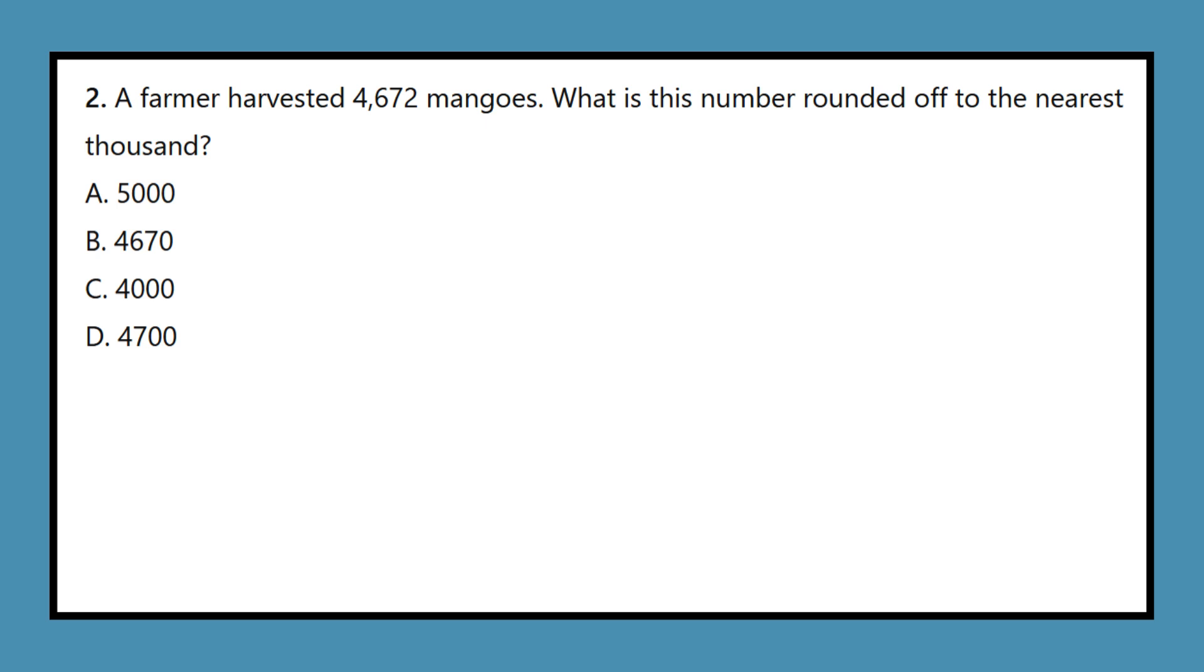Question 2: A farmer harvested 4,672 mangoes. What is this number rounded off to the nearest thousand? A. 5000, B. 4670, C. 4000, D. 4700.